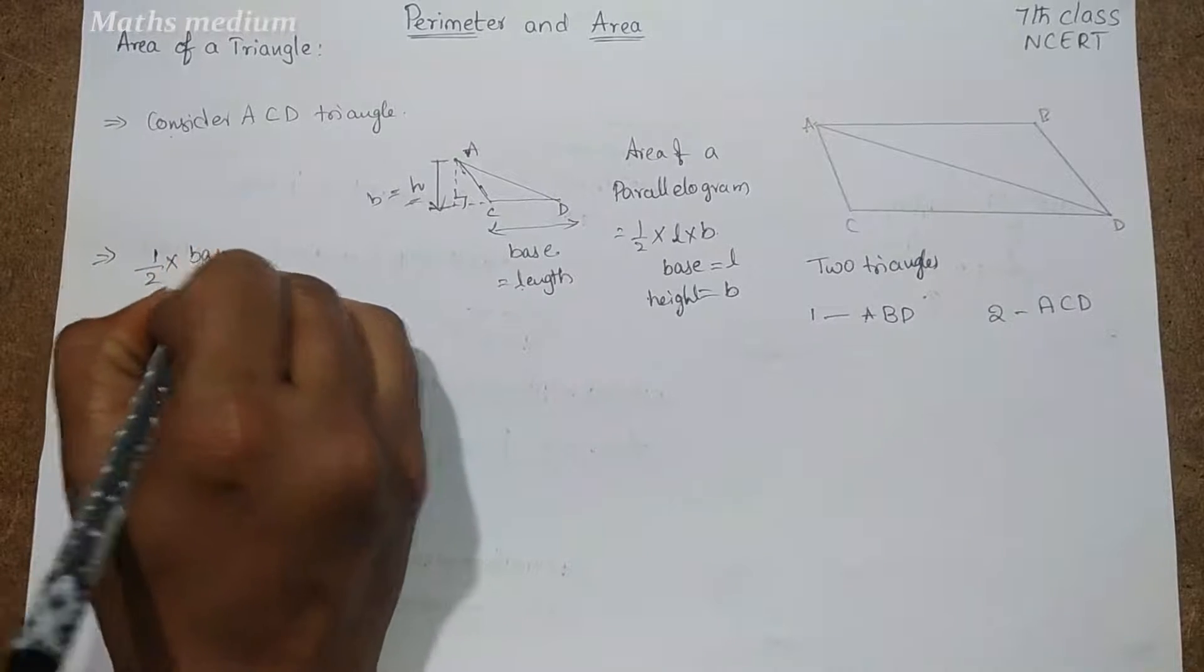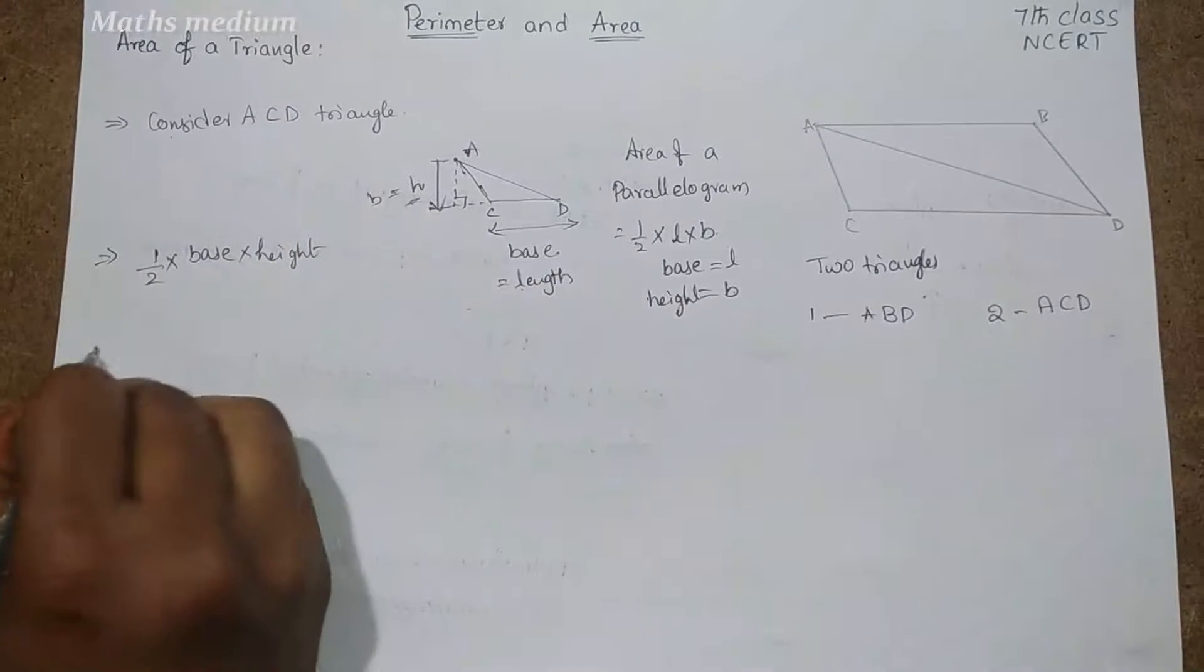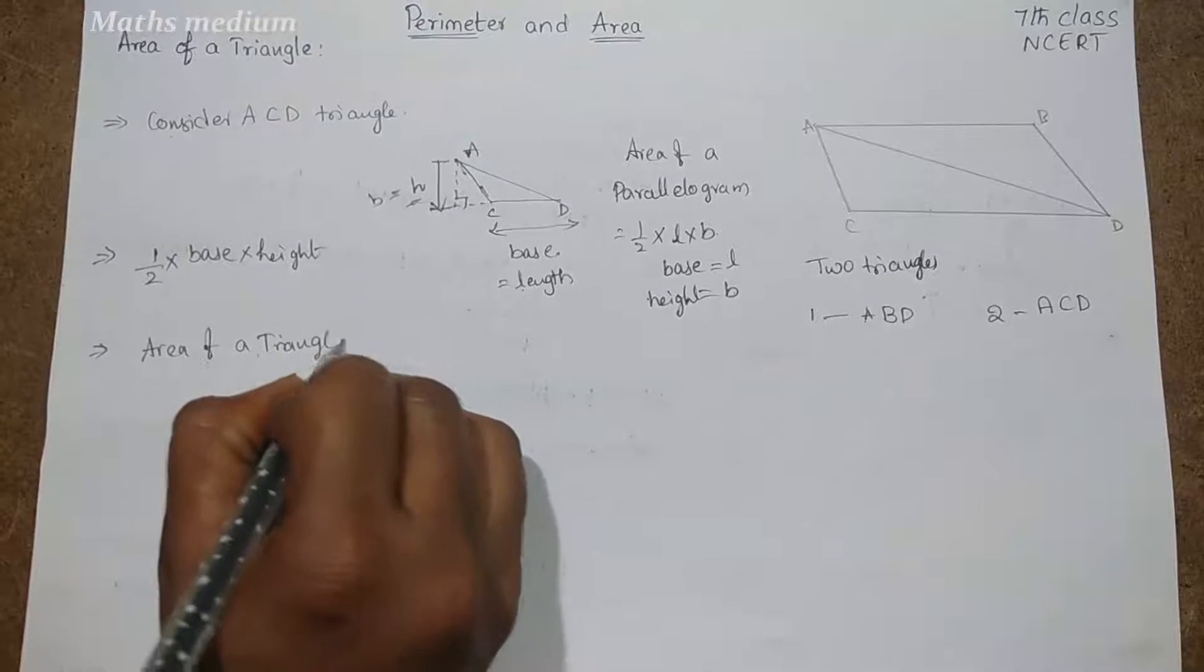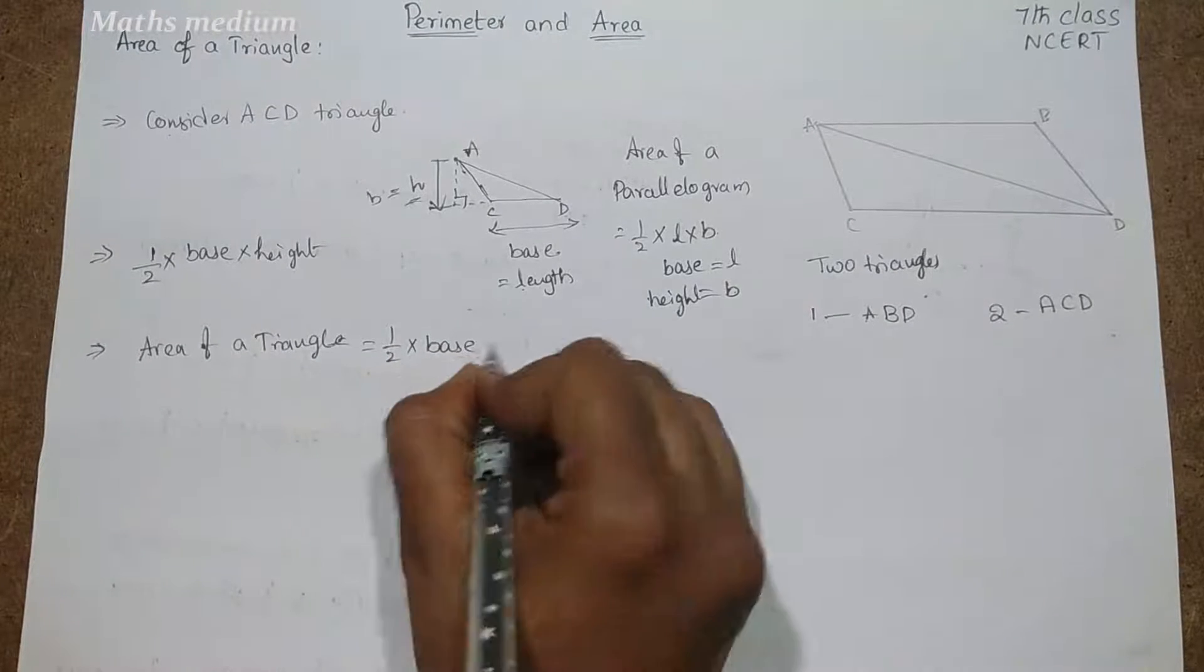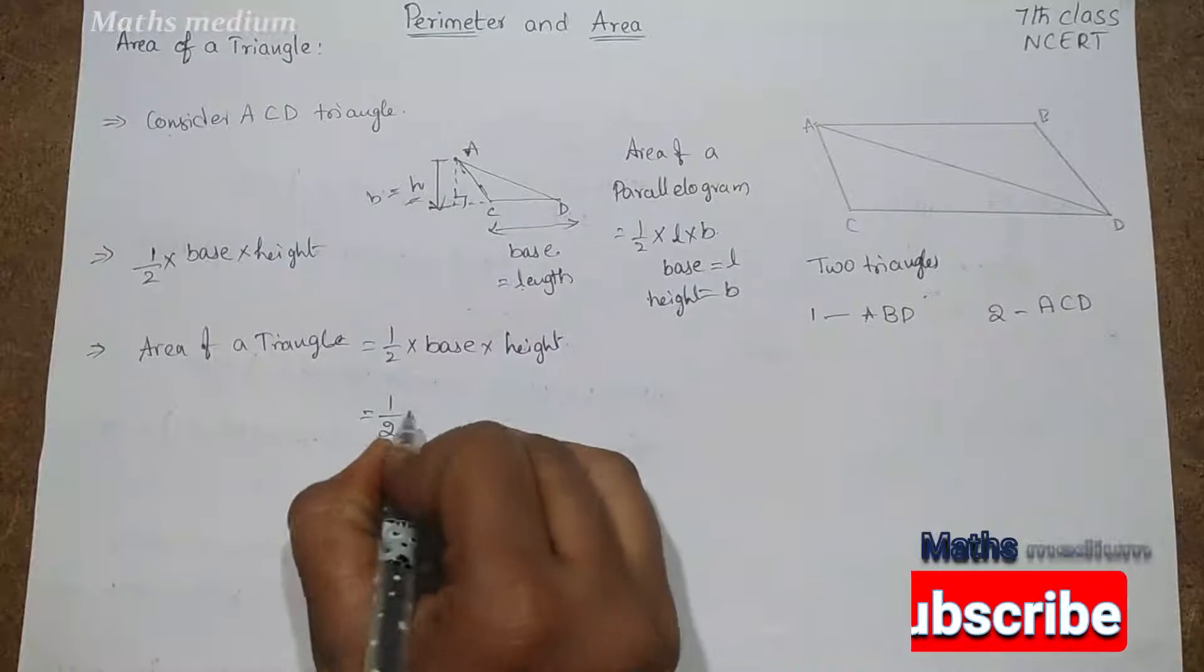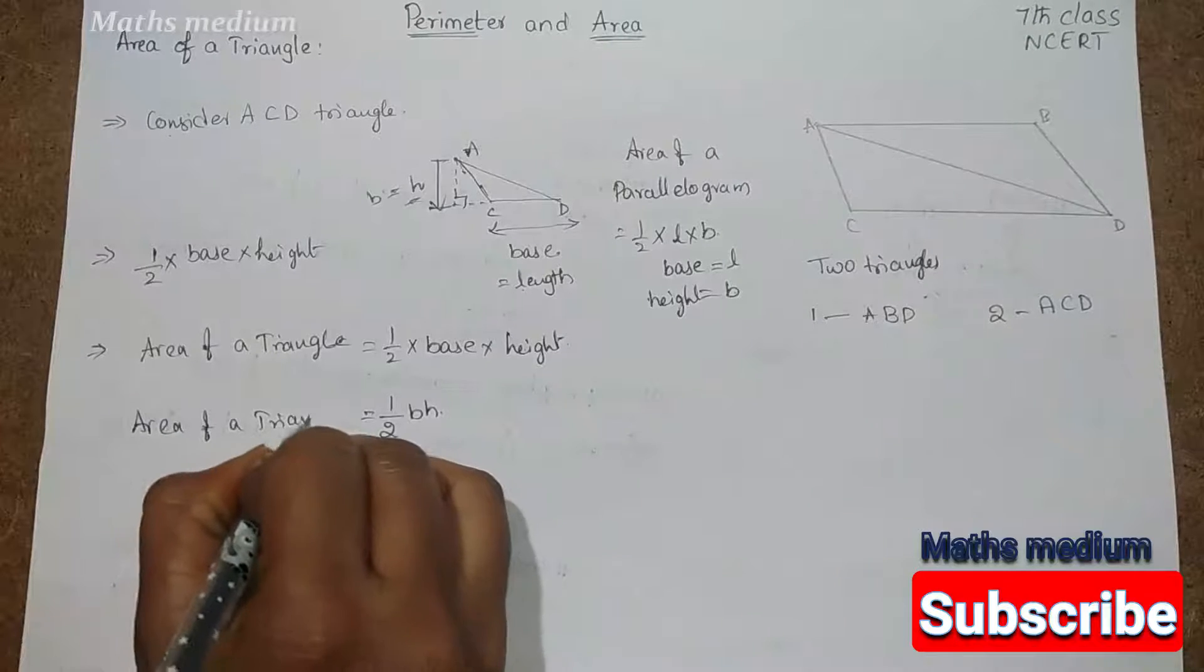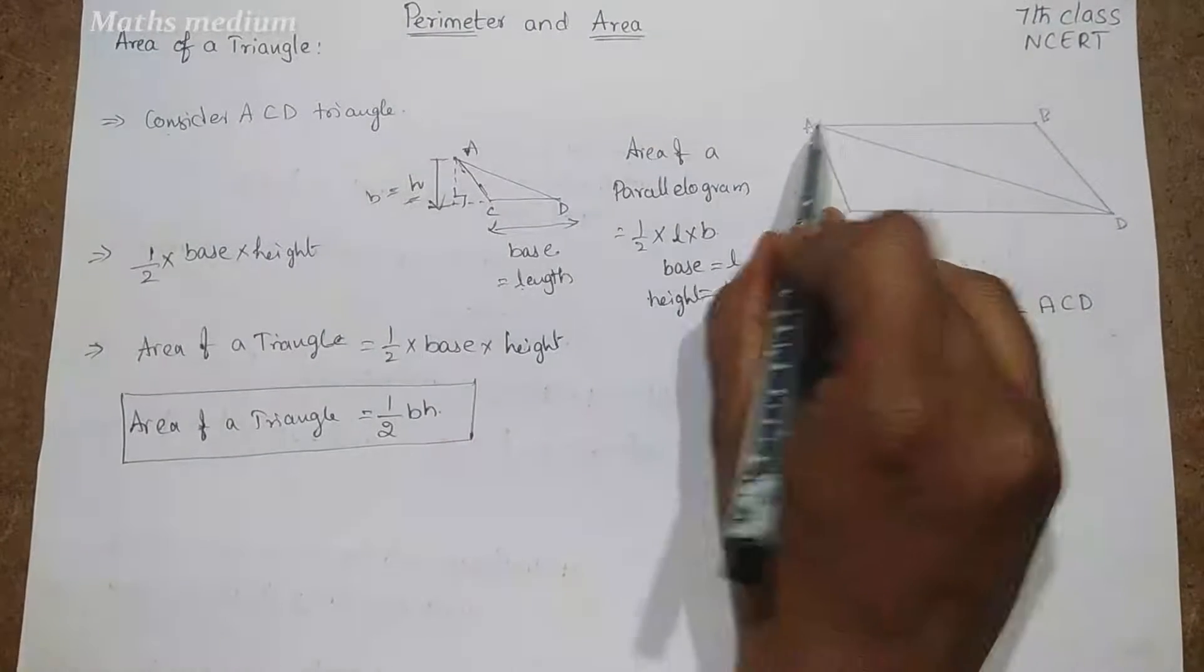So that is, area of a triangle is equal to half into base into height. Generally we call it as half BH as the formula. So this is area of a triangle.